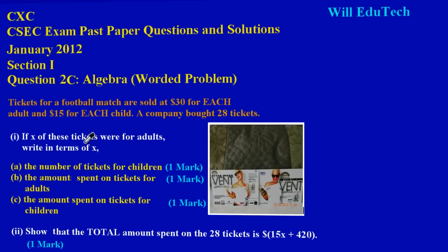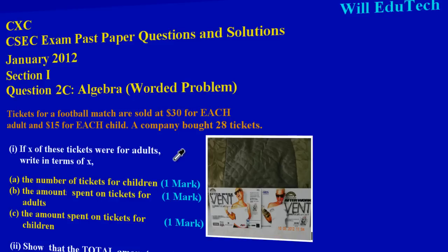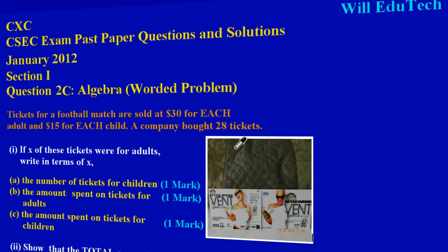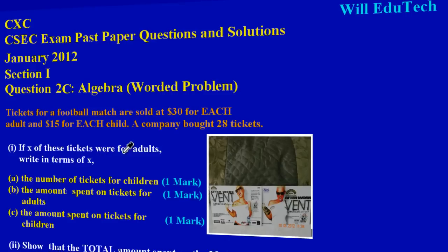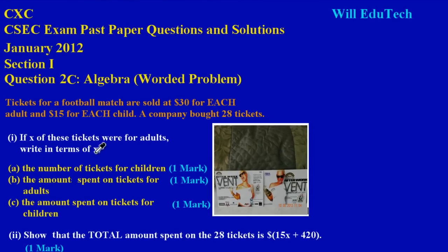This question is about some tickets sold. I've inserted a visual to make the lesson a bit more appealing. So let's get into it. They are saying that tickets for a football match are sold at $30 for each adult and $15 for each child. A company bought 28 tickets. Now in part one, they're saying if X of these tickets were for adults, we're required to write in terms of X part A: the number of tickets for children.